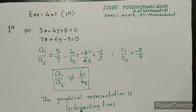But here, a1 by a2 is not equal to b1 by b2. So we treat it as these are called the intersecting lines.